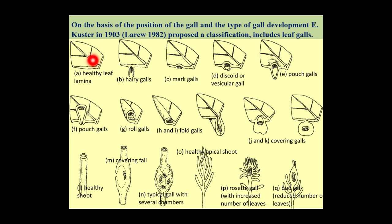This is the healthy leaf lamina, and this is the lamina which possesses a gall. This is the hairy gall, also known as Filz gall. The Filz gall or hairy gall are characterized primarily by hairy epidermal outgrowth, and this outgrowth is induced by the insects or other inducers.